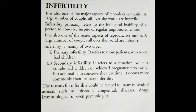Around the world, about forty percent of couples are infertile, meaning they are not able to conceive a child. Infertility is divided into two major categories: primary infertility and secondary infertility. Primary infertility refers to couples who have never been able to have children in their lives.